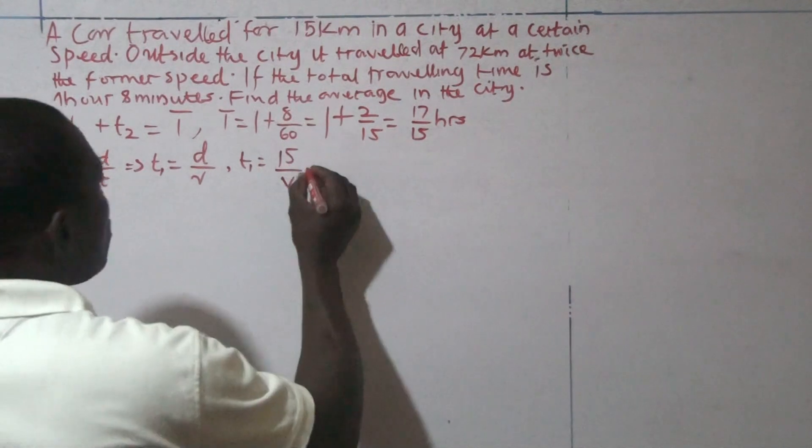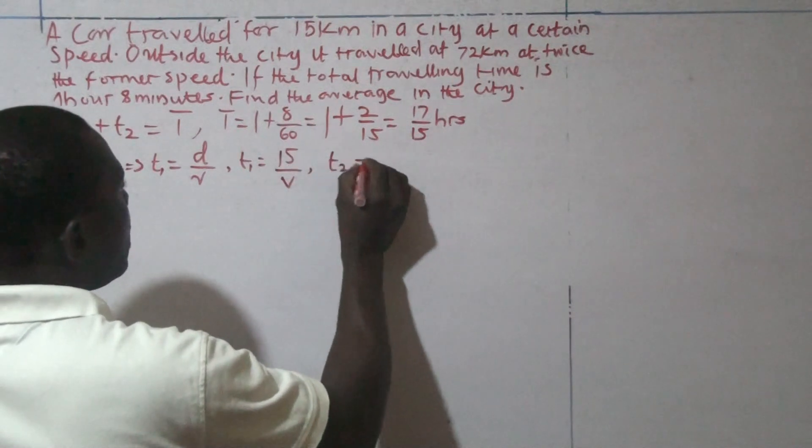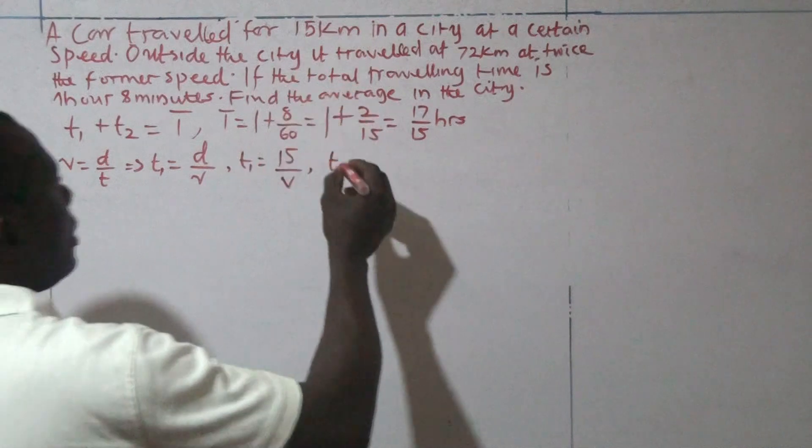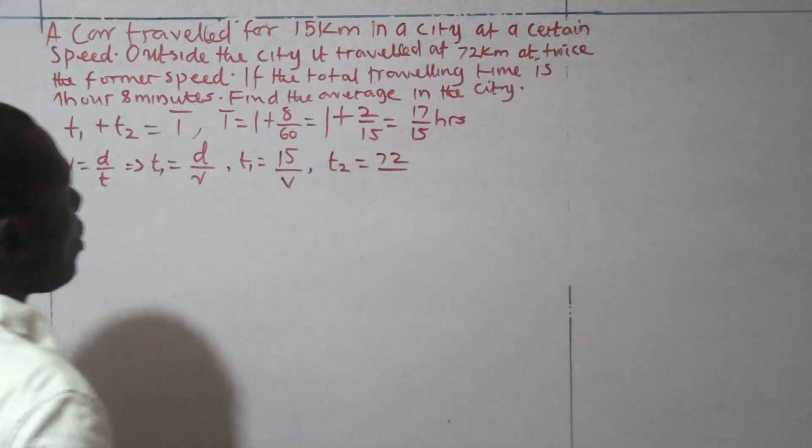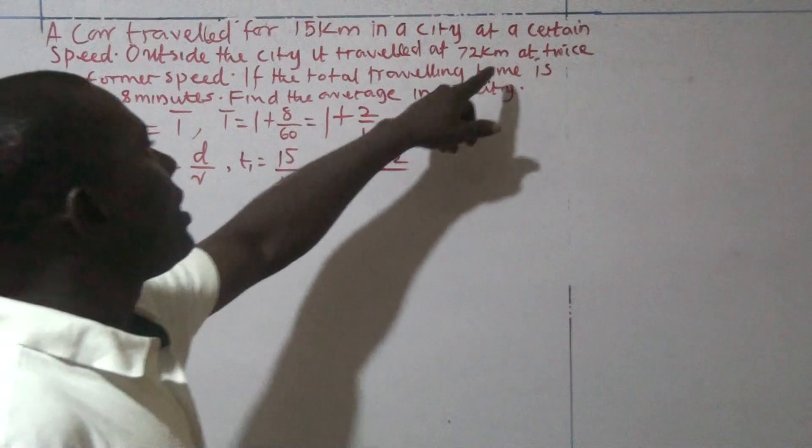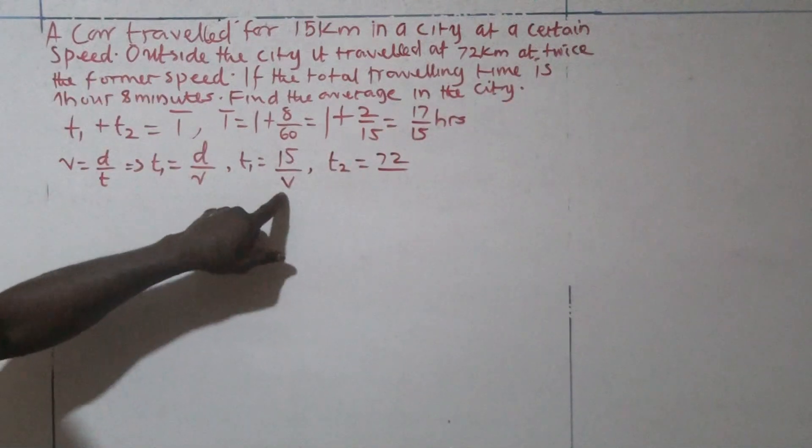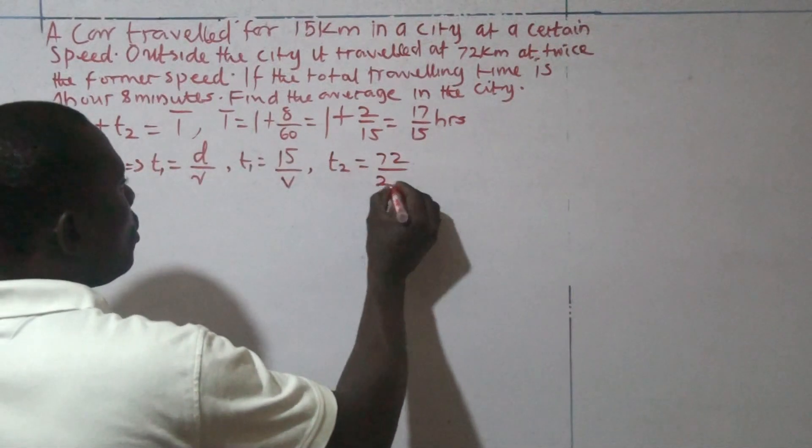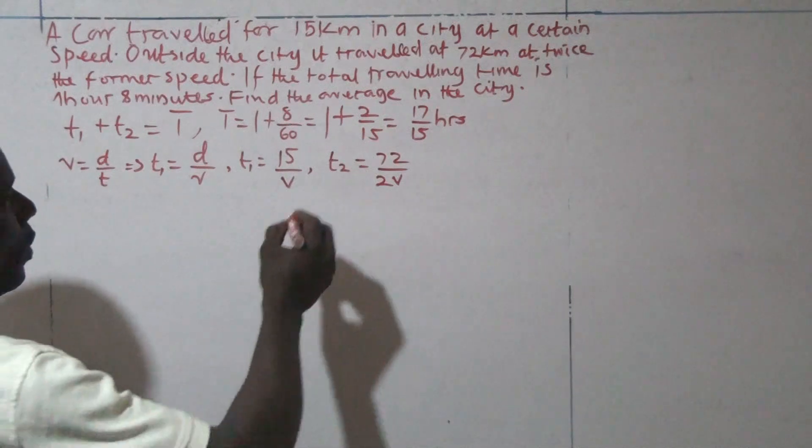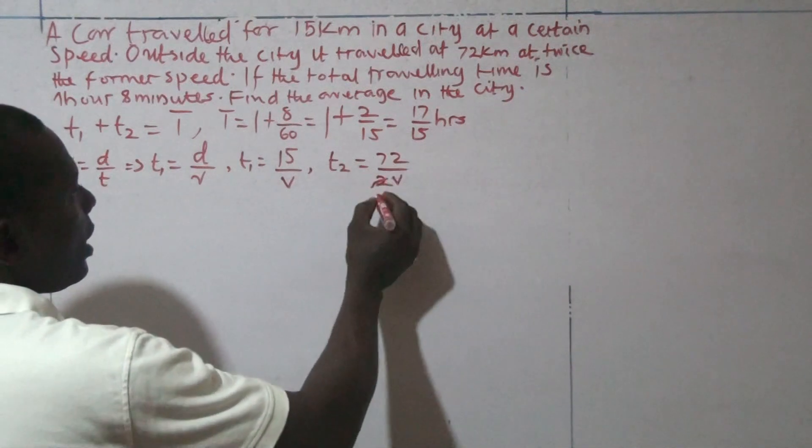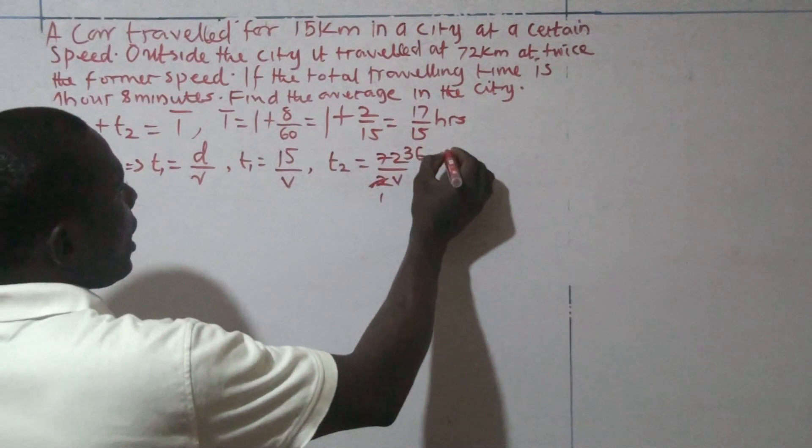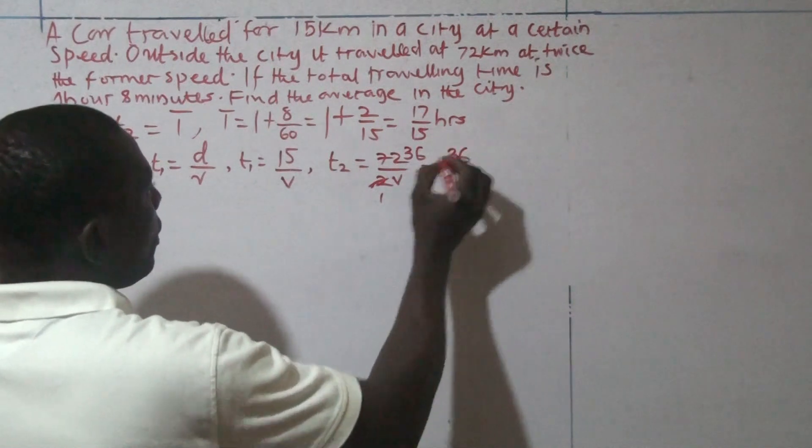Then the second part, which is T2 now, the journey outside the city. We see that the distance is 72 kilometers, and the question here is that twice the former speed V, then twice means times 2, so this will be 2V. So here, if you look at this second part, 2 in 72 will give us 36, so that the time there will be 36 over V.